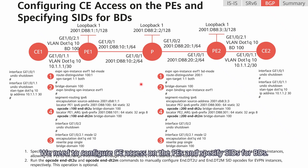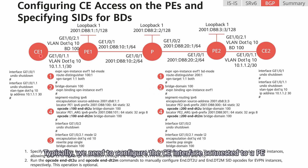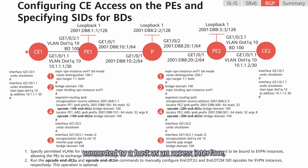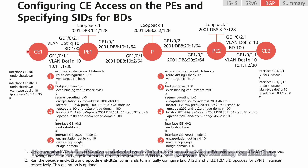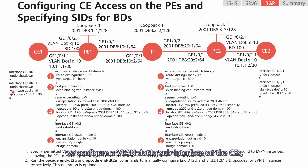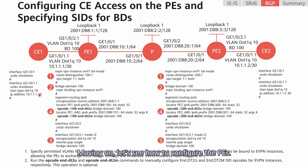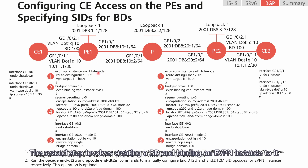We need to configure CE access on the PEs and specify CEs for BDs. For the CEs, we typically configure the CE interface connected to a PE as a trunk interface and the CE interface connected to a host as an access interface, adding both to the same VLAN. However, to facilitate inter-CE packet forwarding verification, we configure a VLAN dot1Q sub-interface on the CEs, specify the VLAN ID of 10, and configure an IP address. For the PEs, the first step involves creating an EVPN instance working in BD mode. The second step involves creating a BD and binding an EVPN instance to it, so that EVPN VPLS data is forwarded within the BD.